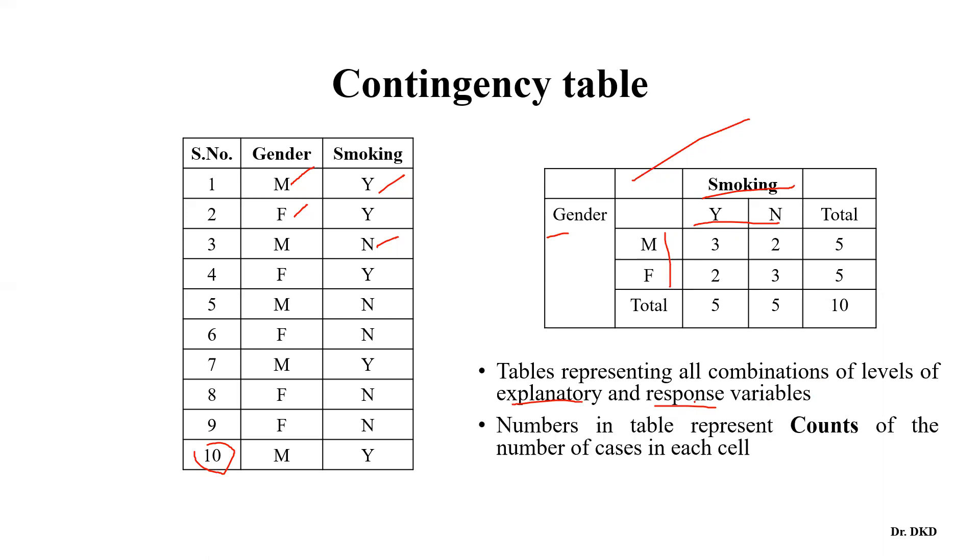So numbers in the table represent counts. Here the number in the table is counts - three means three males who are smokers, and two males who are non-smokers. So in each cell it represents the number of cases. Row and column totals - this is 10 - is known as the marginal counts.